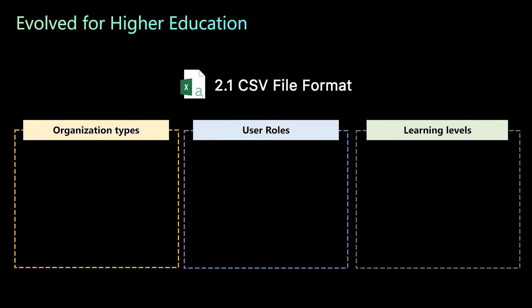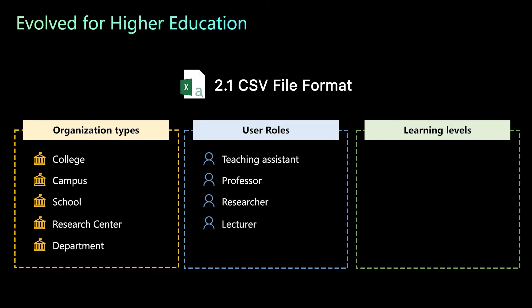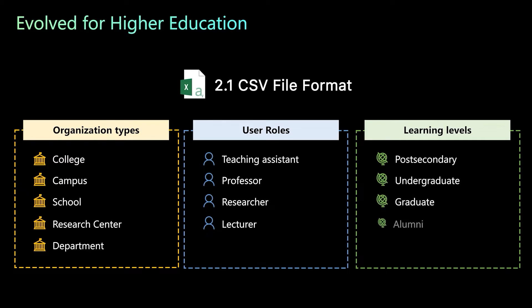The SDS version 2.1 CSV format is now evolved for higher education, with newly added organization types like college, campus, school, research center, and department. User roles such as TA, professor, researcher, and lecturer have been added, along with learning levels like post-secondary, undergraduate, graduate, and alumni.